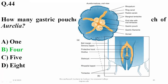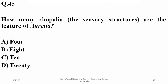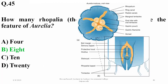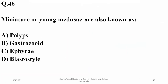Aurelia has eight rhopalia, which are sensory structures — as shown in the diagram, one rhopalium is enlarged showing the sensory lappets surrounding each rhopalium. Miniature young medusae are known as ephyrae, so C is the right option — these are smaller medusae present in some classes such as Scyphozoa.